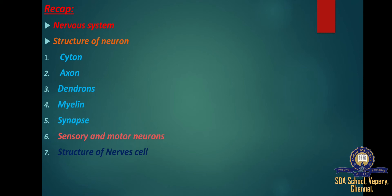Synapses, also called neuronal junctions, are the site of transmission of electrical nerve impulses between two nerve cells, or between a neuron and a gland or muscle cell. A synaptic connection between a neuron and a muscle cell is called a neuromuscular junction.